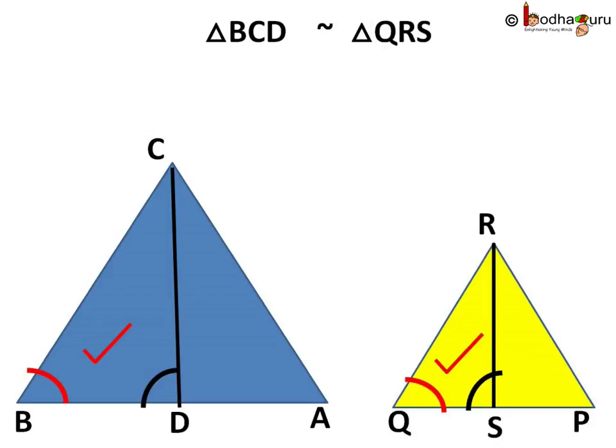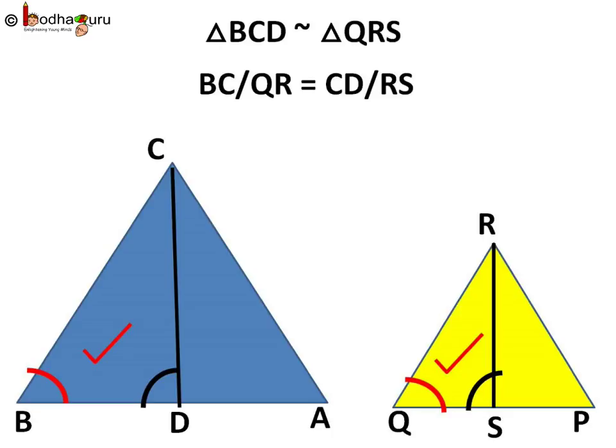Now we take BCD and QRS triangles, the smaller ones. Angle B is equal to angle Q as given triangles are similar. Angle D and angle S are right angles, so equal. So two angles are equal—this means the third angle will be equal too. So BCD and QRS are similar triangles, so BC by QR is equal to CD by RS.